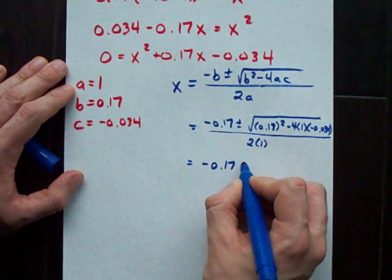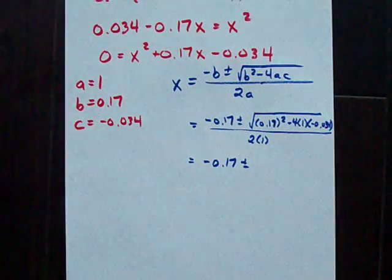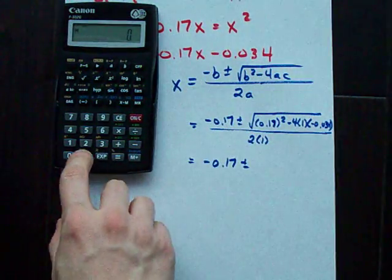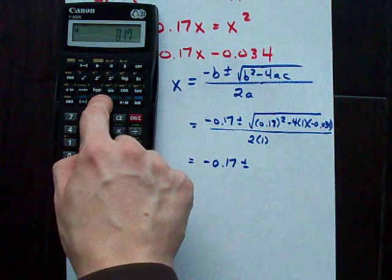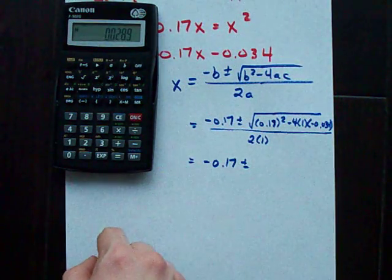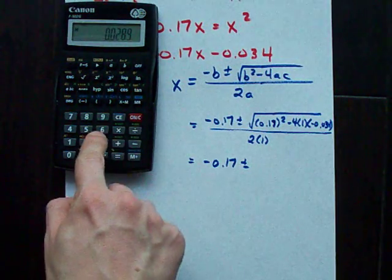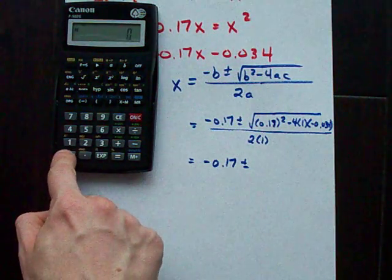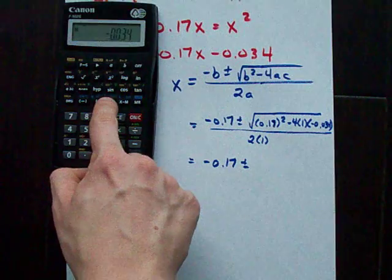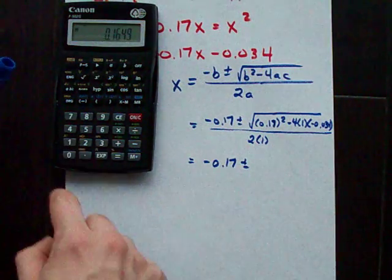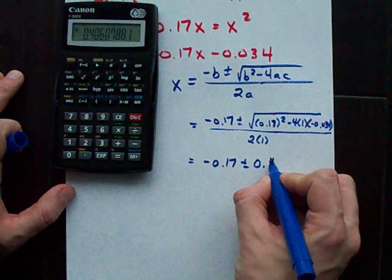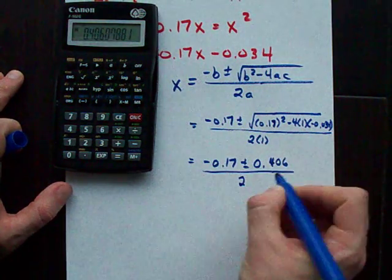Negative 0.17 plus or minus. Now, I'm going to use my calculator to figure out what this number is. Yeah, I get that this is a lot of work. 0.17 squared minus 4 times 1 times 0.034 negative. I end up with this, and I'll take the square root of it to give me 0.406 all over 2.